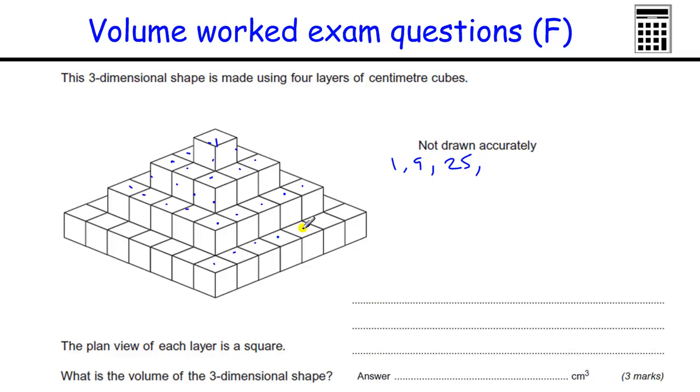This one's one, two, three, four, five, six, seven by seven which is 49. So there's one on the top, nine on the second layer, 25 then 49. We just need to add those up.